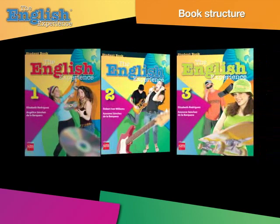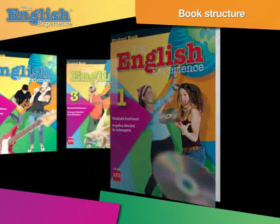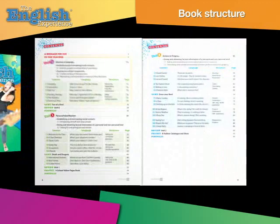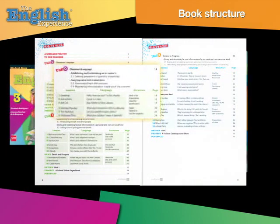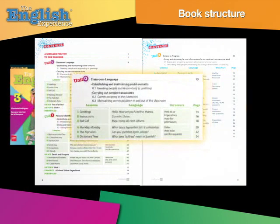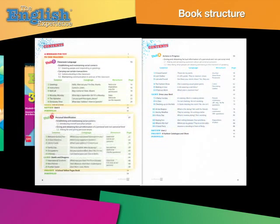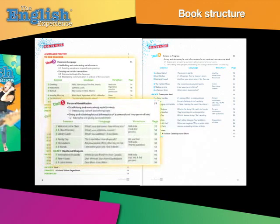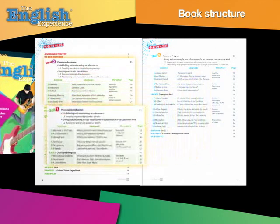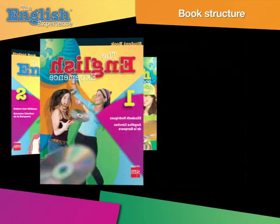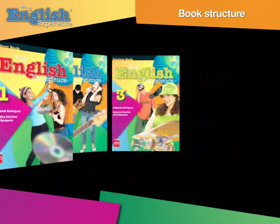Books two and three contain five units. However, book one contains six units instead of five. This is because English Experience One has an extra unit with only six lessons, in which students are introduced to basic classroom language. Unit one in English Experience One is then divided into nine lessons, so that the 15 lessons of units zero and one are taught in the first two months of the school year.